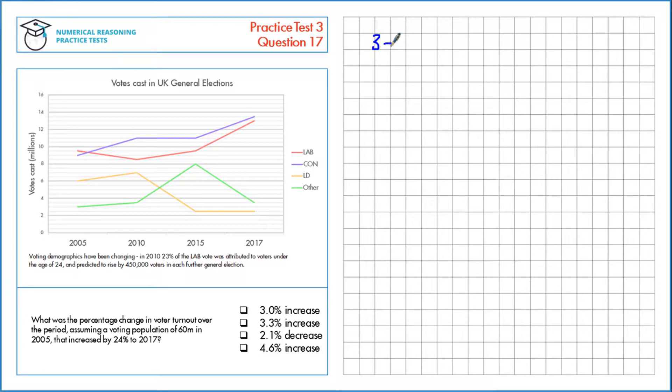which is 3 plus 6 plus 9 plus 9.5 for each of the four parties. That gives us a total of 27.5 million votes, and that's for 2005.